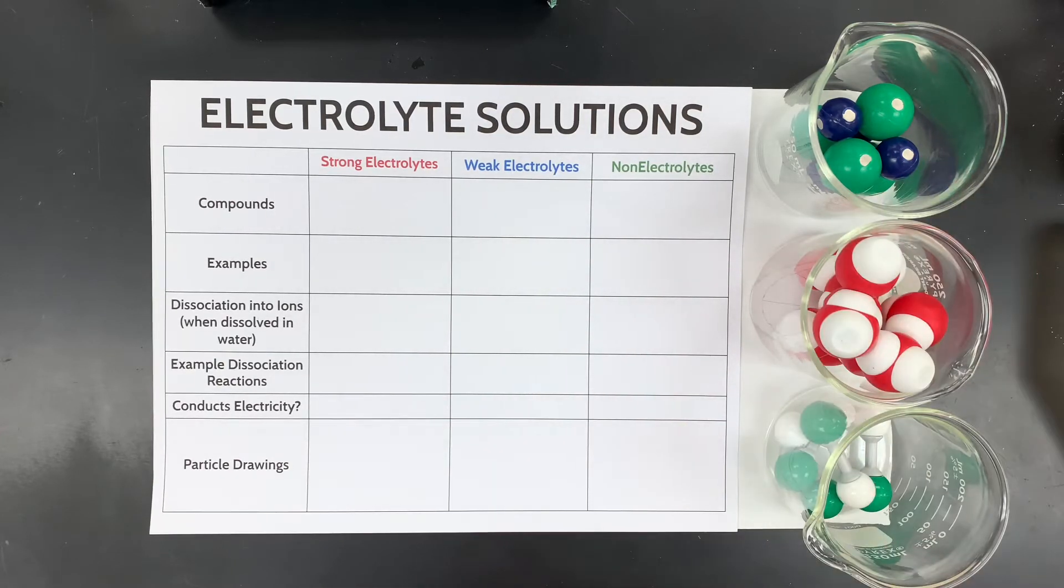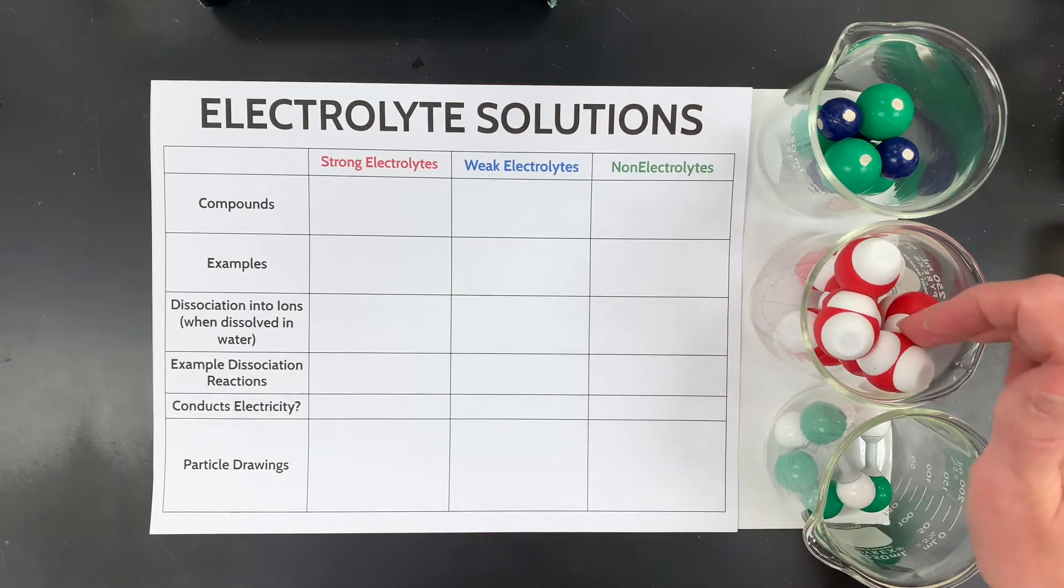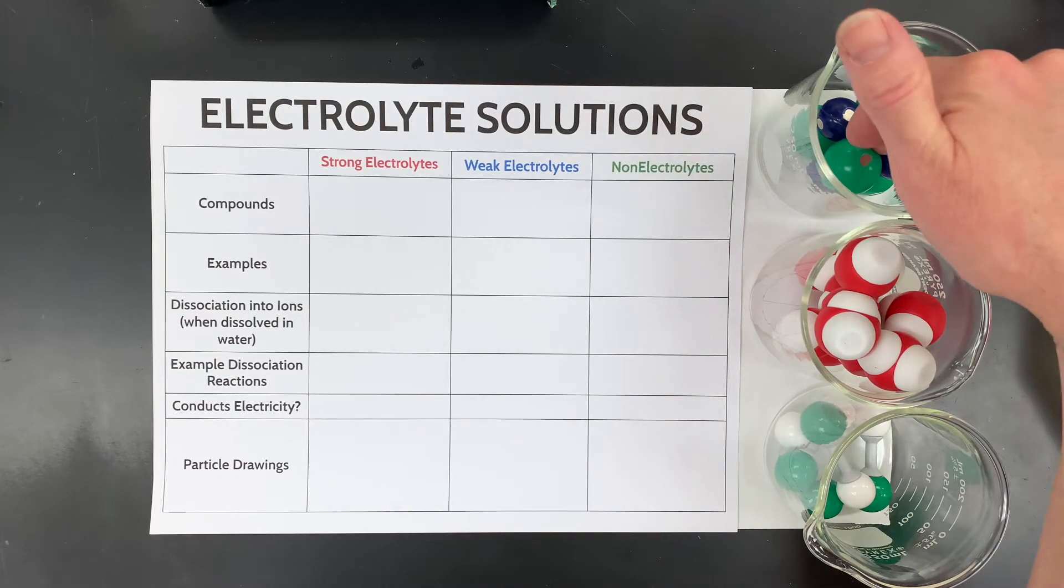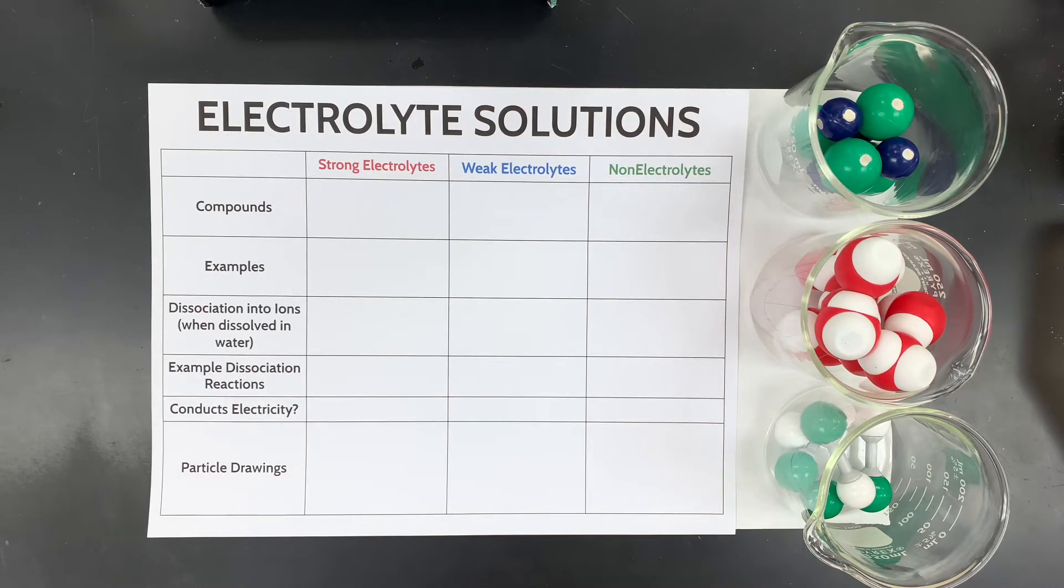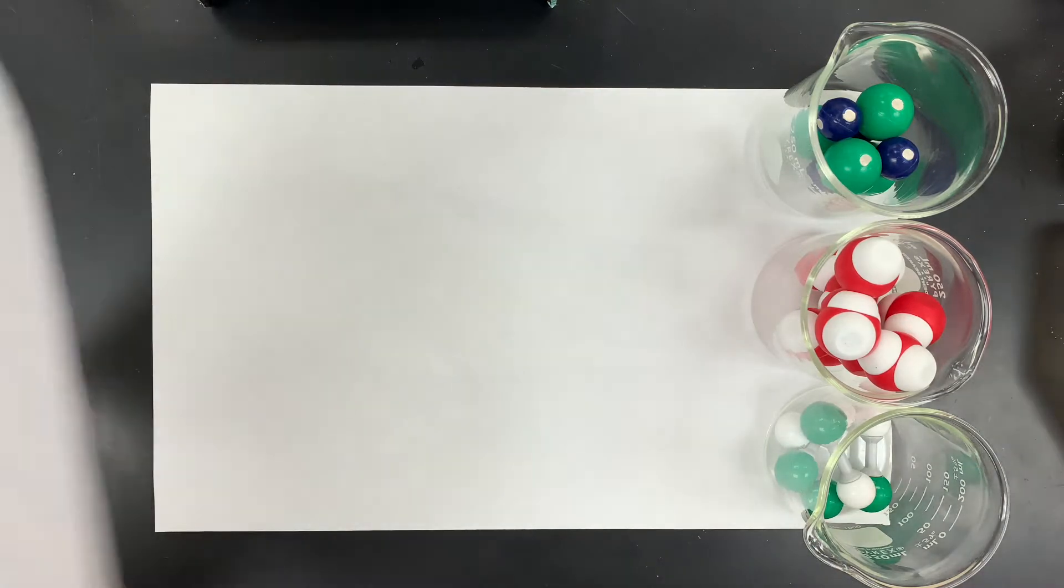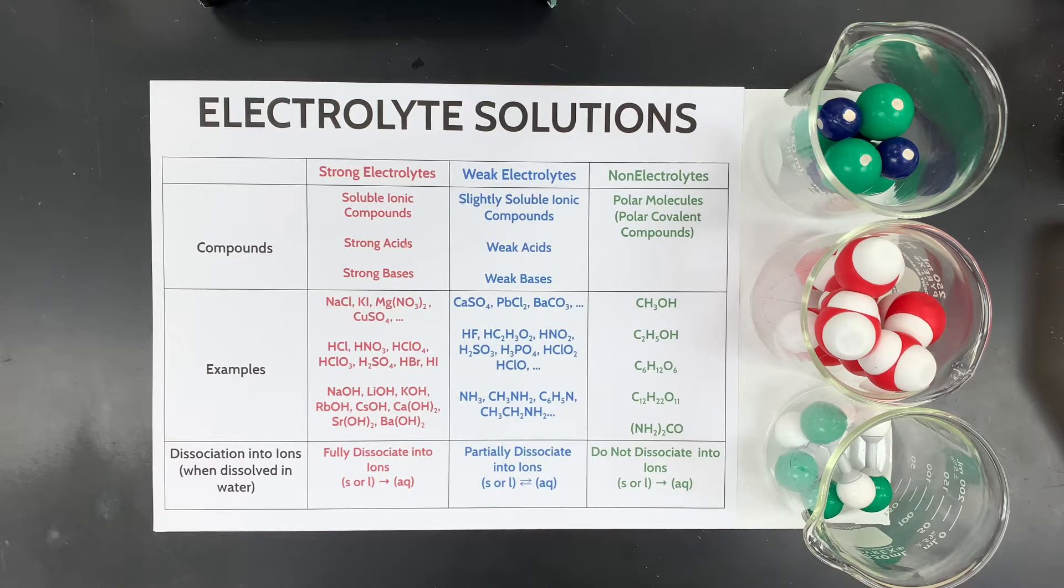So I have some models here that I'd like you to then draw the particulate view of what that looks like once you have that solute dissolved in water, and water would be the solvent, and the solute would be the substance that goes into it that might become an electrolyte or make it an electrolyte. All right, so let's just get started. You can pause the video right here if you'd like to take your time and write this down first, and I'm going to go through it with you.